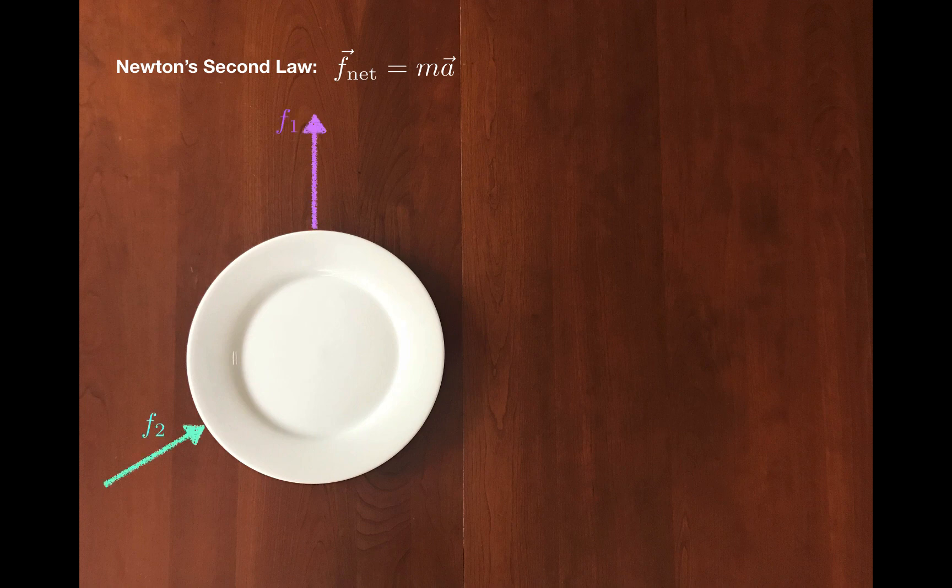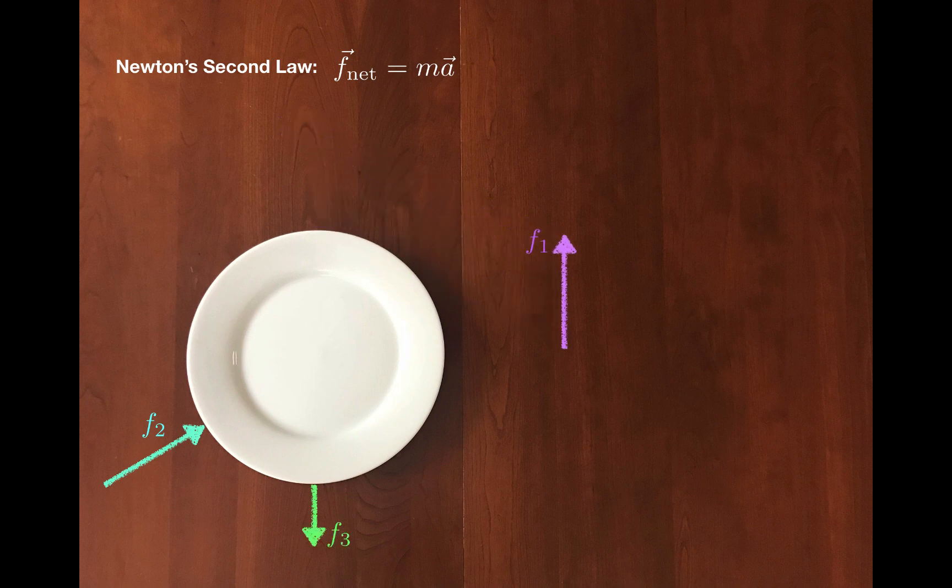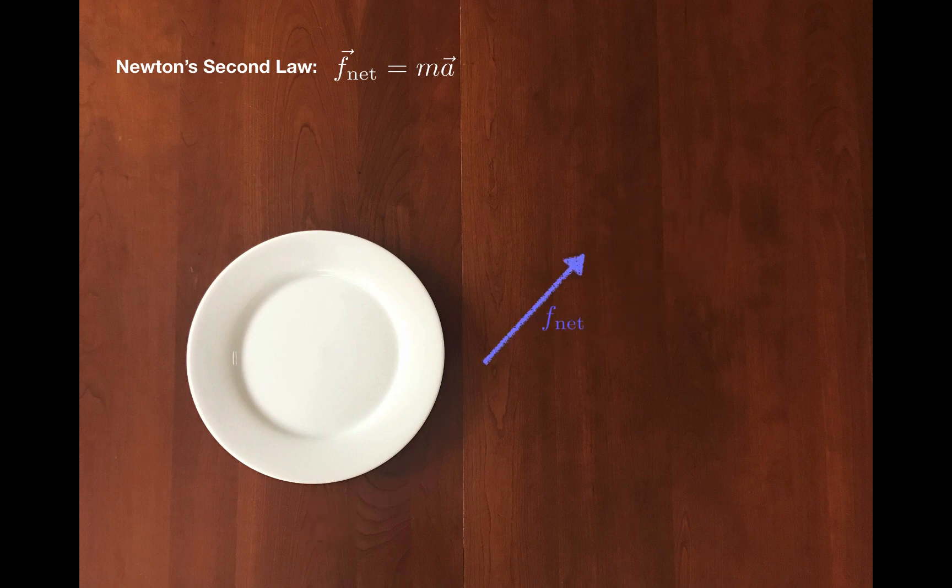The idea here is that if a bunch of forces act on an object, you can add them together or sum them, and this is the net force acting on the object. By rearranging F net equals ma, you can see that it's possible to find that acceleration by dividing the net force by the mass of the object.